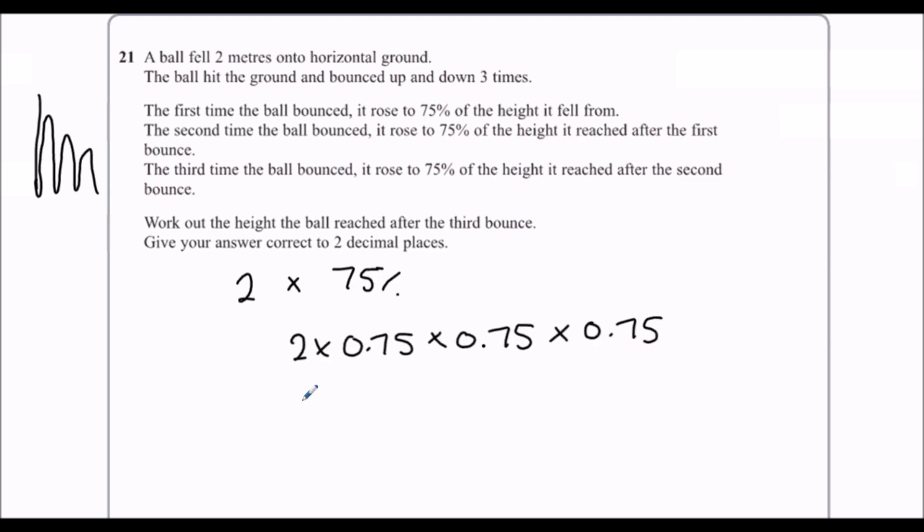What that actually is, is two, the original, times 0.75 cubed. So we can do it all in one go and type it into the calculator, and to two decimal places you should get 0.84 meters.